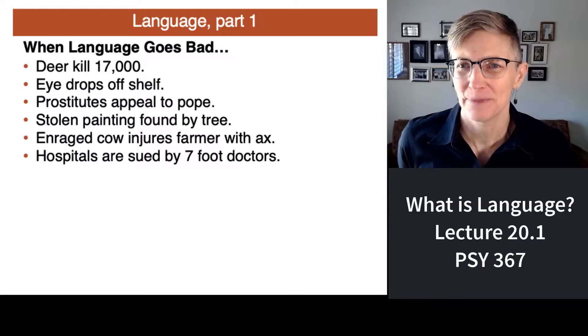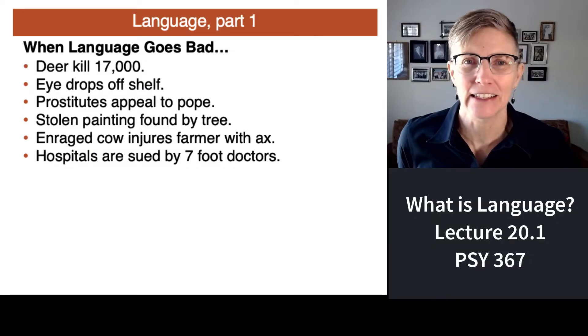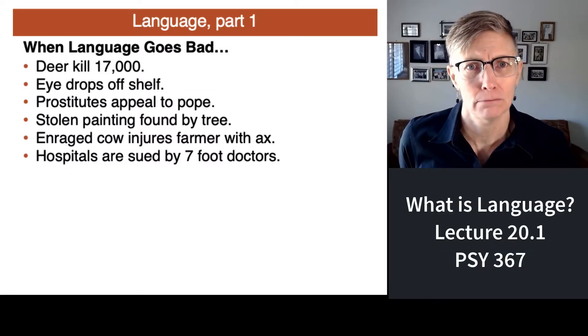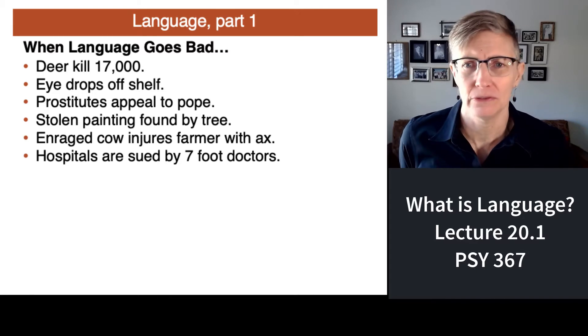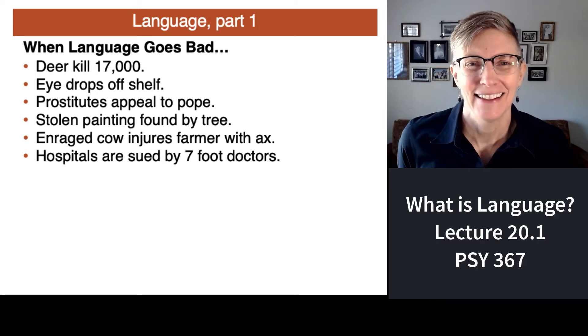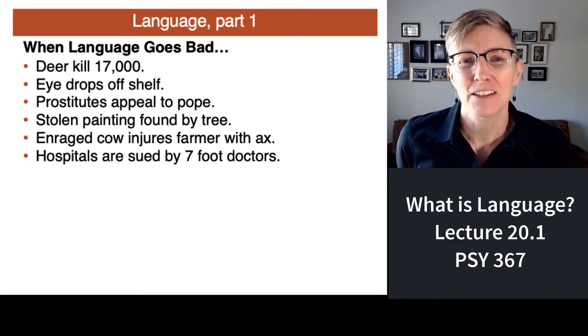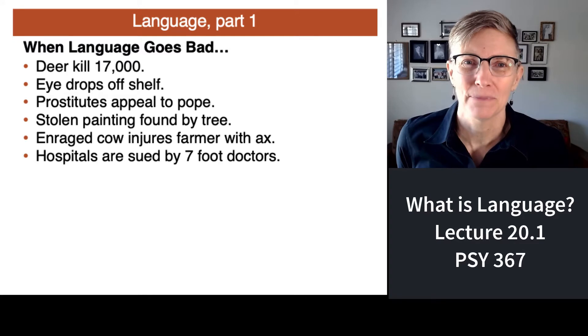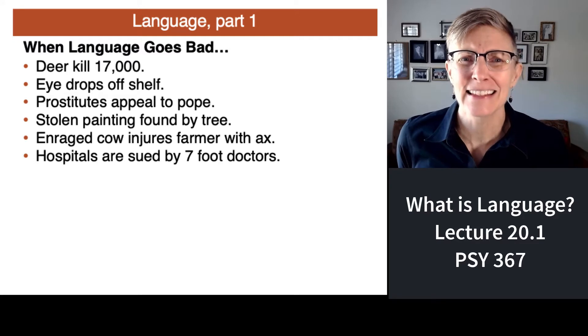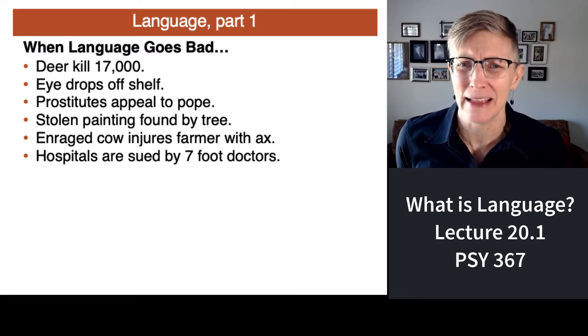Let me read to you some actual newspaper headlines: 'Deer kill 17,000,' 'I drops off shelf,' 'Prostitutes appeal to Pope.' These sentences point out something that's fundamental about language. It's ambiguous, it's complicated. Language is messy.